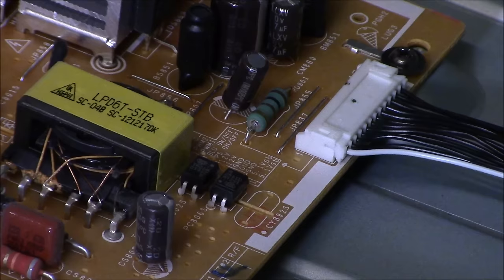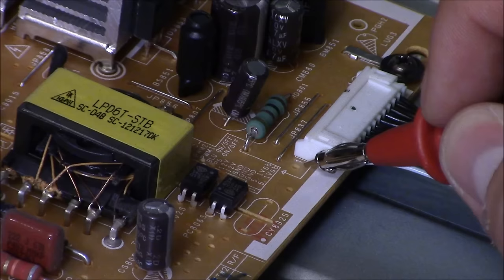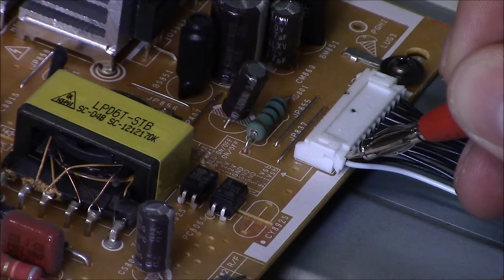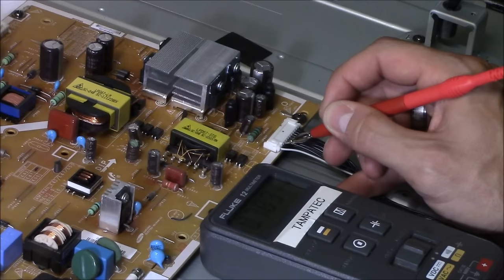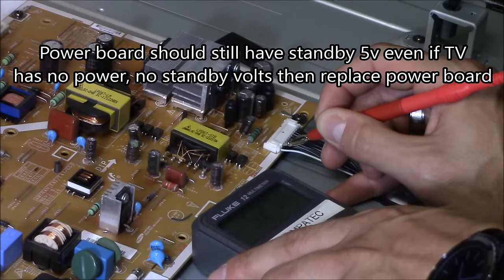Alright, so next I'm going to put it on pin 1. There's a number 1 right there next to pin 1 which is the white wire and we should be getting about 5 volts. Yeah, we're getting 5.2 volts which is good and then pin 2 is also standby volts and we're getting 5.2 and that's reading good so our standby voltage is good so our power supply is most likely good.